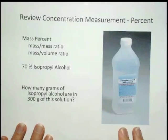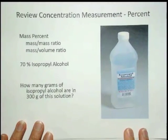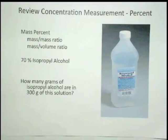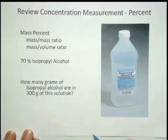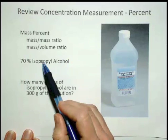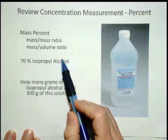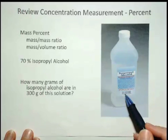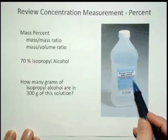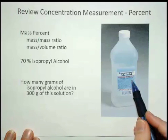The first one to take a close look at is percent. Percent is used when whatever you're talking about is a pretty high concentration. Mass percent could be a mass-mass ratio or a mass-volume ratio. An example of something defined this way would be isopropyl alcohol.